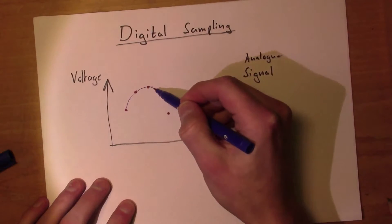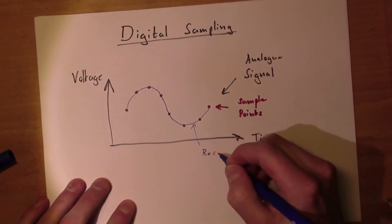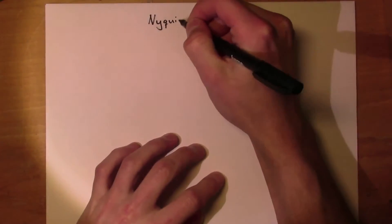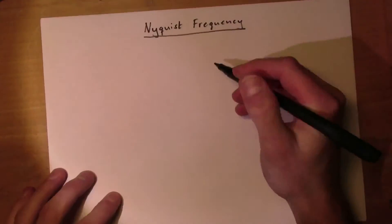The signal can later be recreated using a digital-to-analog converter. The Nyquist frequency is the maximum frequency that the recorder can sample correctly.